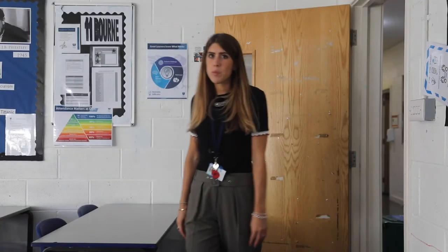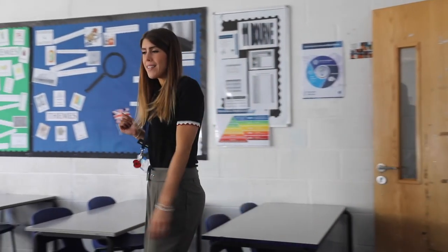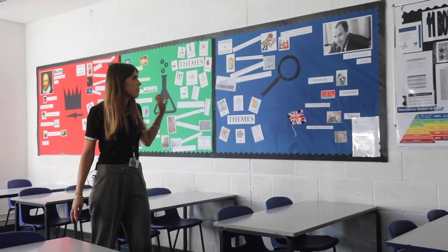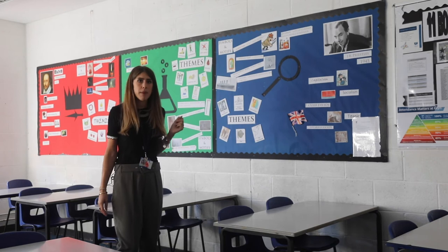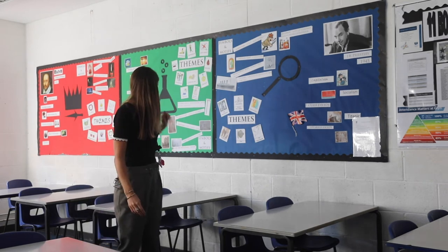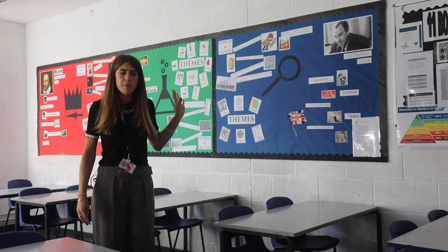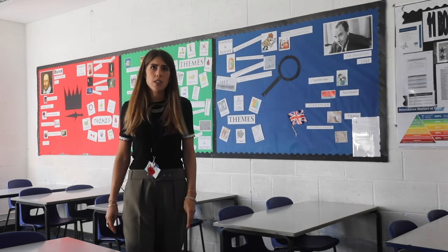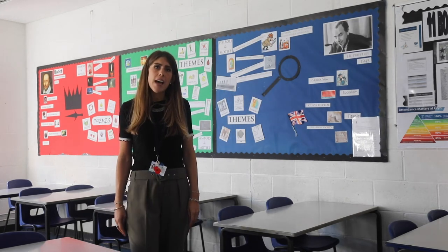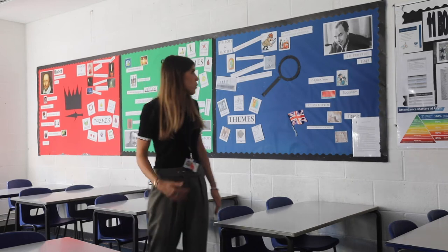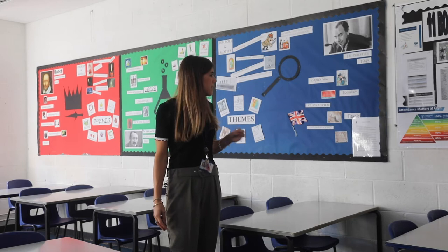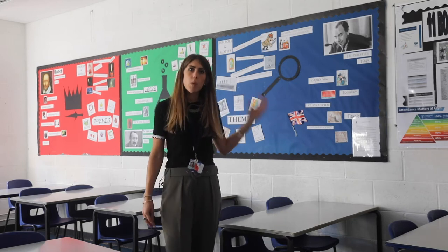Here's another one of our English classrooms where we have some key displays linked to our Key Stage 4 texts. For example, we have J.B. Priestley's An Inspector Calls, and we've also got a Dr Jekyll and Mr Hyde display here. Lots of our key terms and key vocabulary are displayed on the display boards, along with some of the context — for example, socialism, capitalism, and the class divide — when we teach our students about Edwardian society.